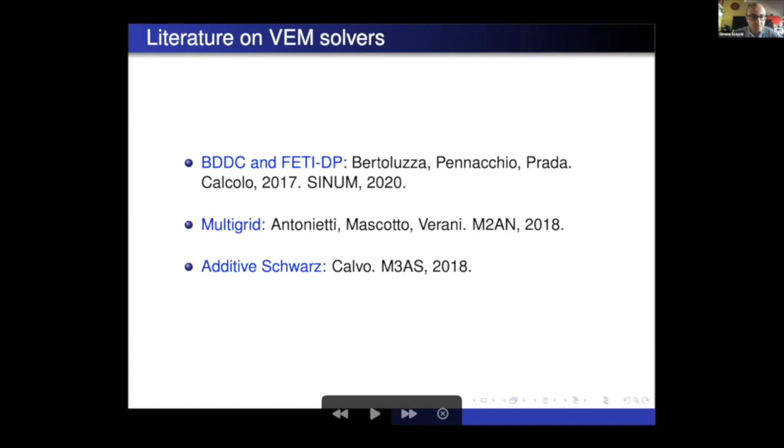So far, regarding them, researchers have considered two main classes of solvers. Domain decomposition, so non-overlapping domain decomposition, such as BDDC and FETI-DP. We're considering this paper by Bertoluzza, Pennacchio, Prada, in a couple of papers. And then the other class of domain decomposition, overlapping additive Schwarz, was considered in two papers by Calvo. And then there is a paper on multigrid, also optimal with respect to the degree of approximation by Paolo Antonietti, Lorenzo Mascotto and Marco Verani. So these works were focusing on a scalar elliptic equation in primal form.